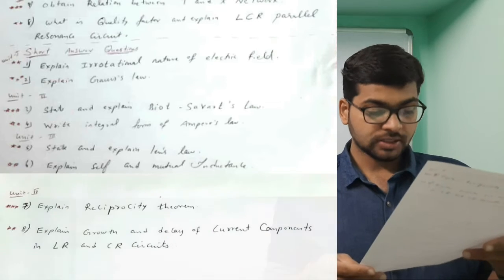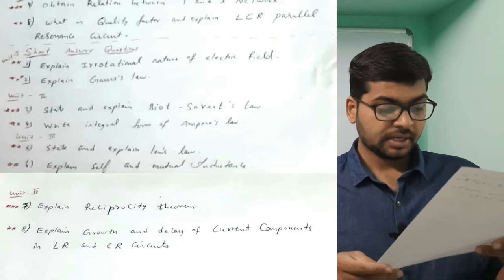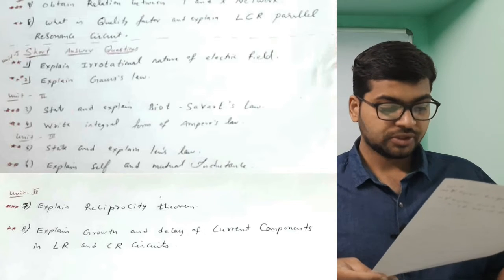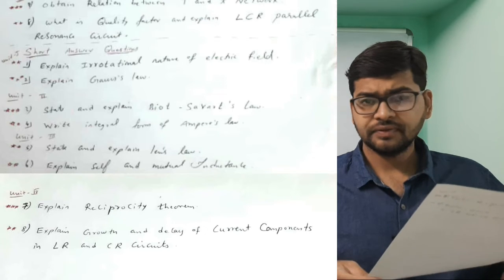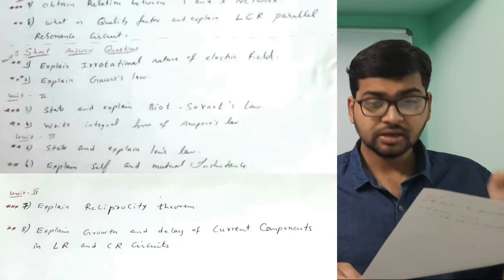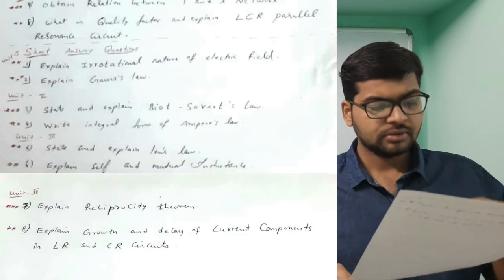Second question is explain Gauss law. Next, state and explain Biot-Savart's law, write integral form of Ampere's law. Irrotational nature of electric field is very important. Gauss law is also very very much important.